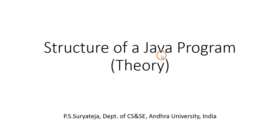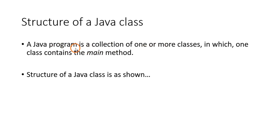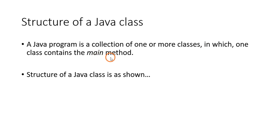When we are talking about the structure of a Java program, you have to know that a Java program contains one or more classes. A Java program is a collection of one or more classes, so whenever you see a Java program you will find one or more classes inside it. Among these classes, one class will contain a main method. People coming from a C or C++ background already know about this — there we call it a function, here we call it a method.